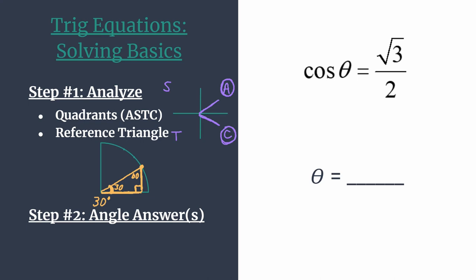Since you're likely solving trig equations in radians, we'll convert 30 degrees to pi over 6. We're going to use this pi over 6 angle as our reference angle for our angles in quadrant 1 and quadrant 4. Remember, a reference angle is simply the amount of rotation from the terminal side of your angle to the x-axis.